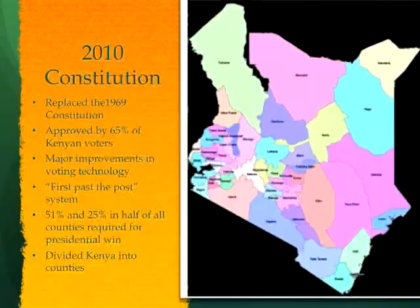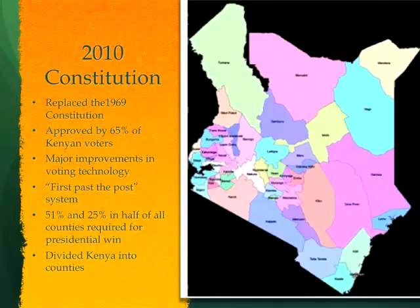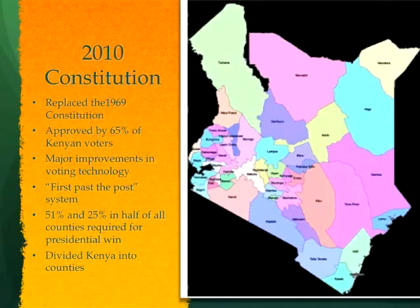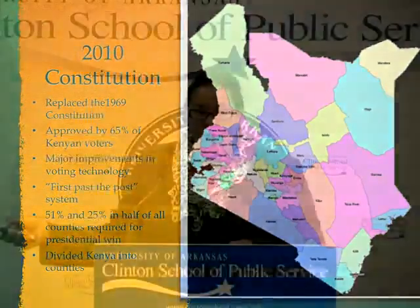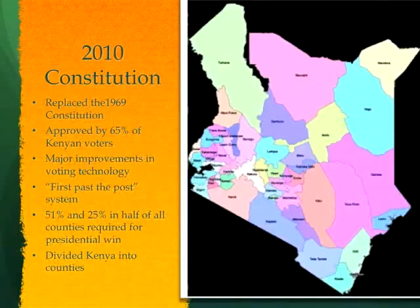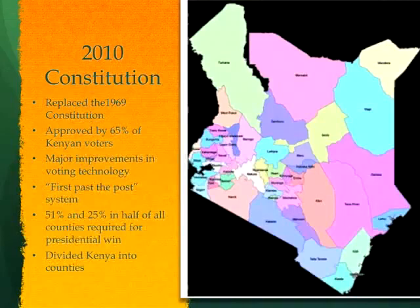In the run-up to the election, we had seven major candidates. Uhuru Kenyatta was the son of Jomo Kenyatta, the first president, and was handpicked by Moi as his successor. If you wanted to be critical of him, you could say he's a spoiled plutocrat whose family owns approximately one-third of the land in Kenya.